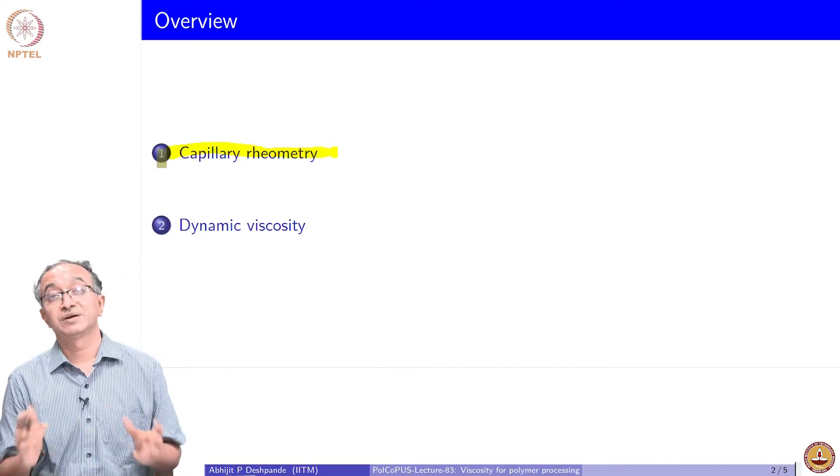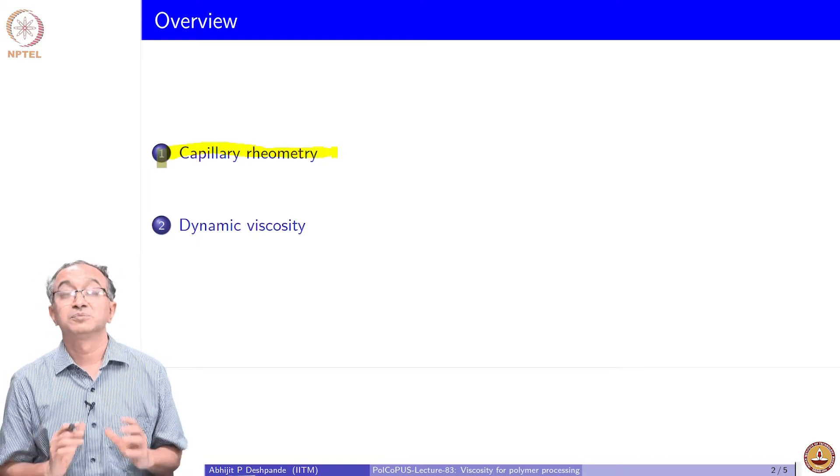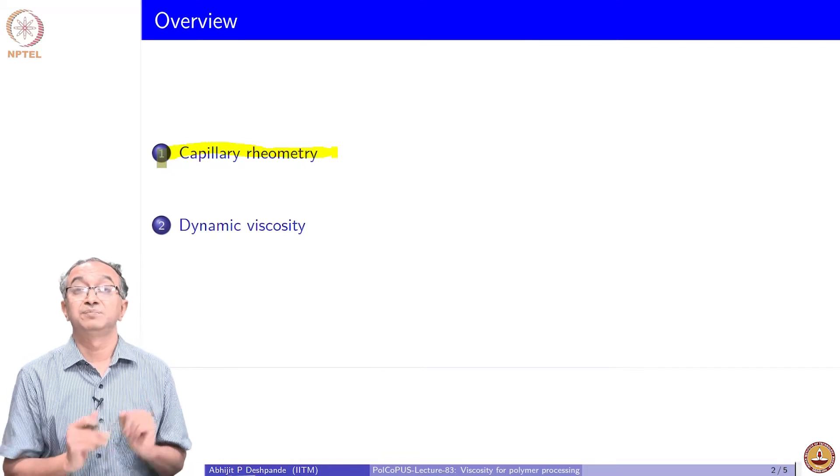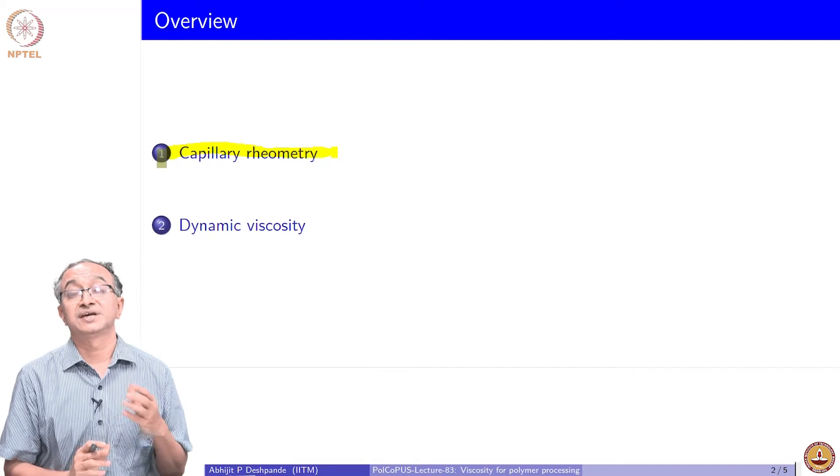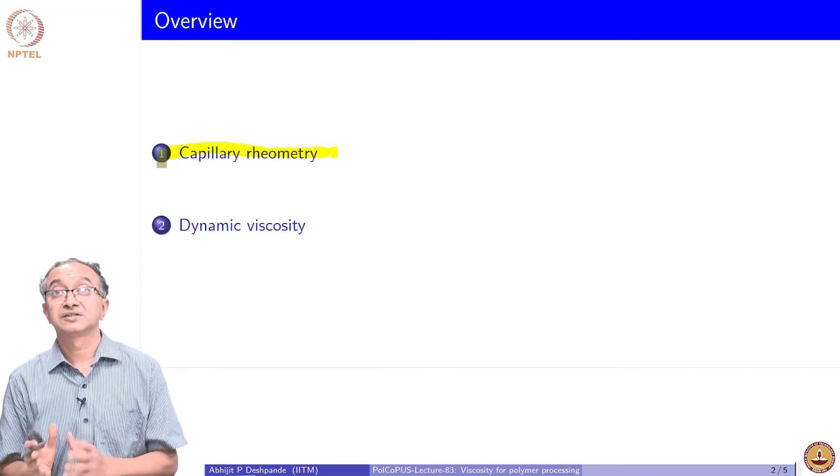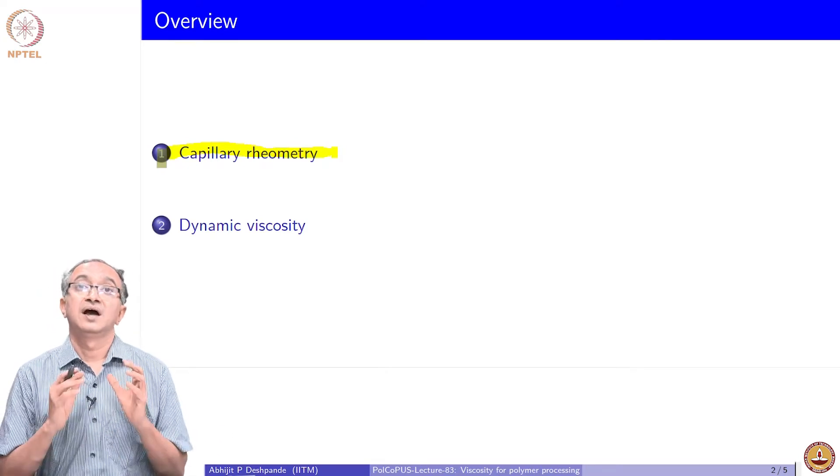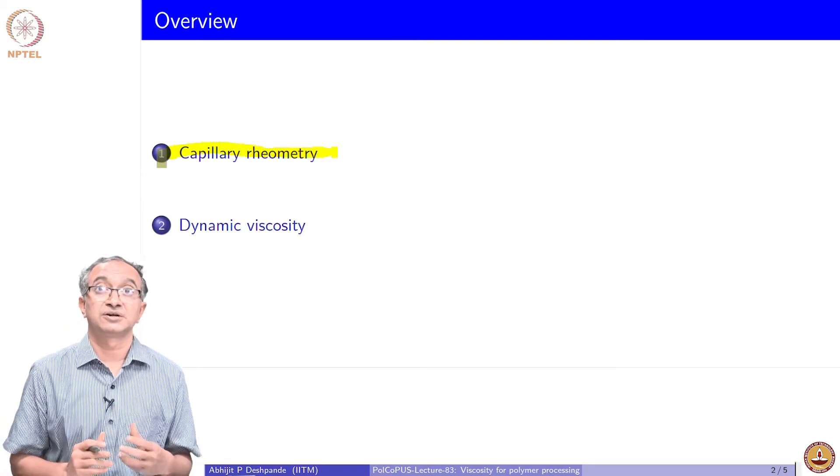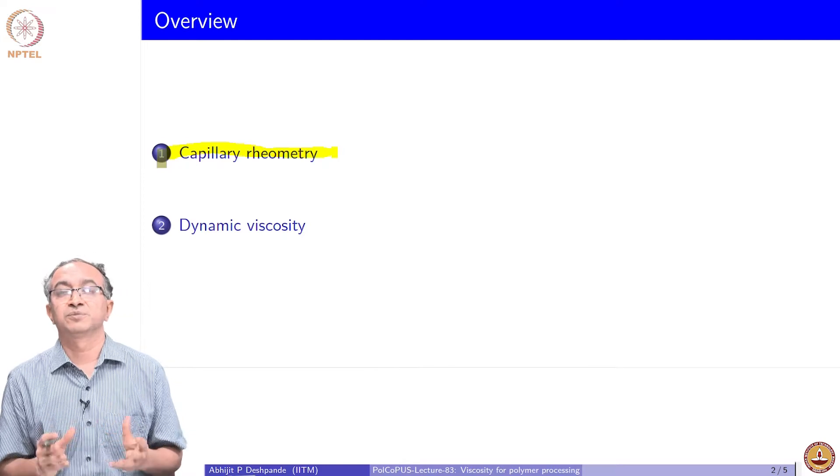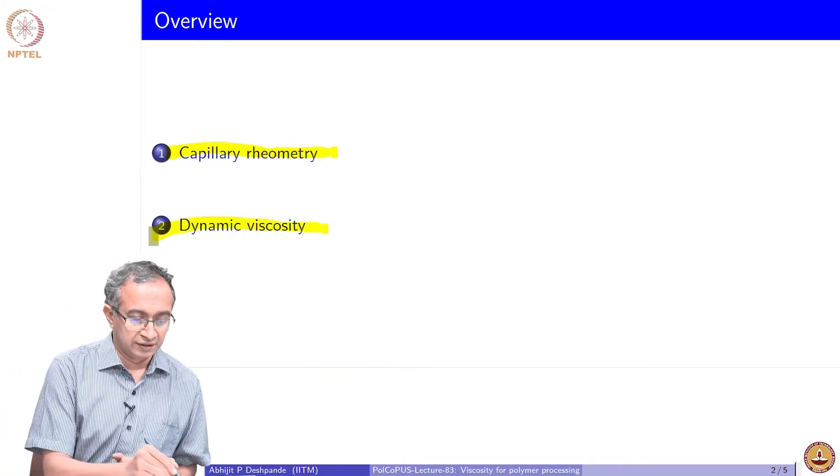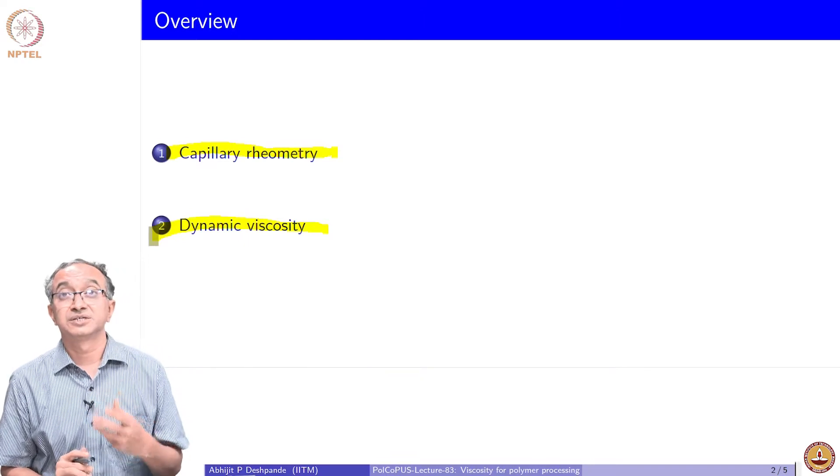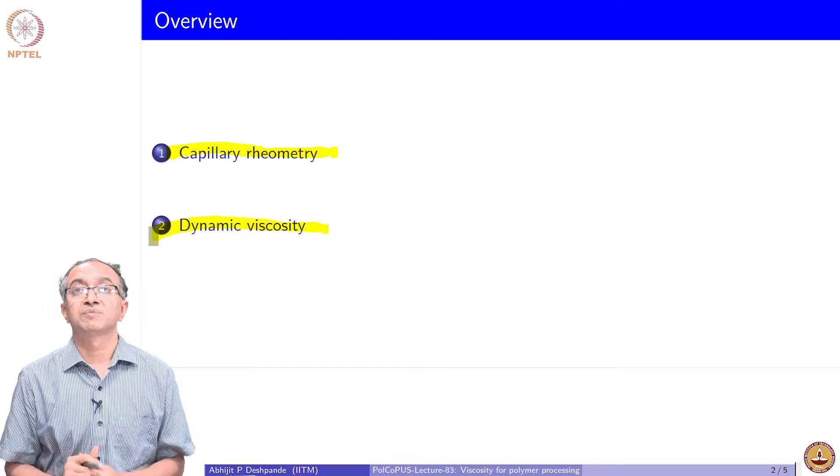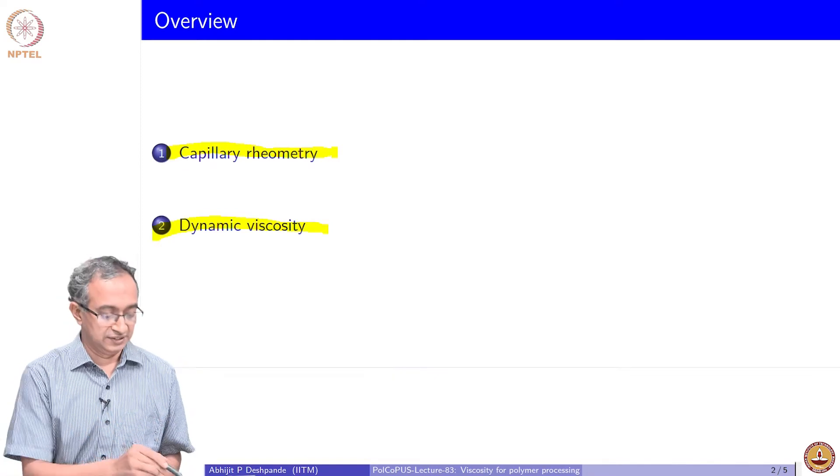Rotational rheometers have become quite common but from a polymer processing point of view capillary rheometry is very important because of the high shear rates that can be achieved. As we have seen in case of injection molding or several other polymer processing operations, high shear rates are always present while in a rotational rheometer such high shear rates may not be always possible. The viscosity measured using oscillatory measurements is also quite commonly used, so we will look at both of these in this lecture.